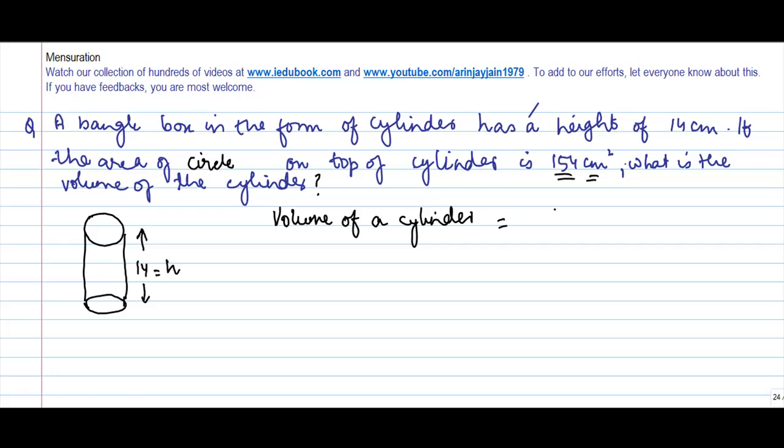...is given by πr²h, or 22/7 × r² × 14. 22 × 2 gives me 44r², but do I know r? No, I do not know the radius.